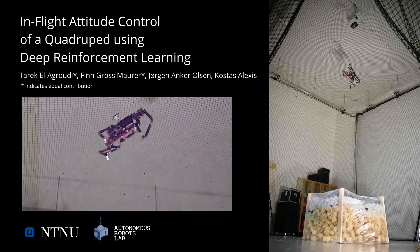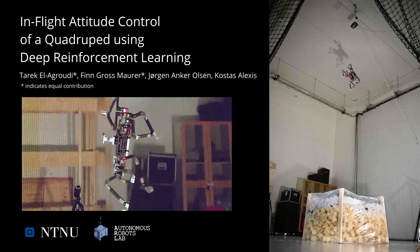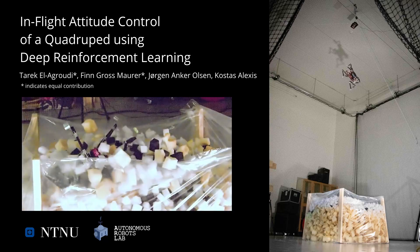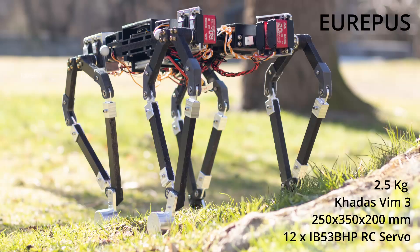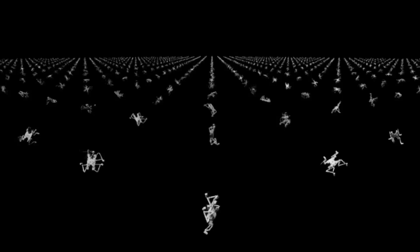This work presents the synthesis of an attitude control policy for a quadruped with a 5-bar linkage leg design using deep reinforcement learning. We demonstrate the policy on the custom-designed low-cost quadruped Auriepus.